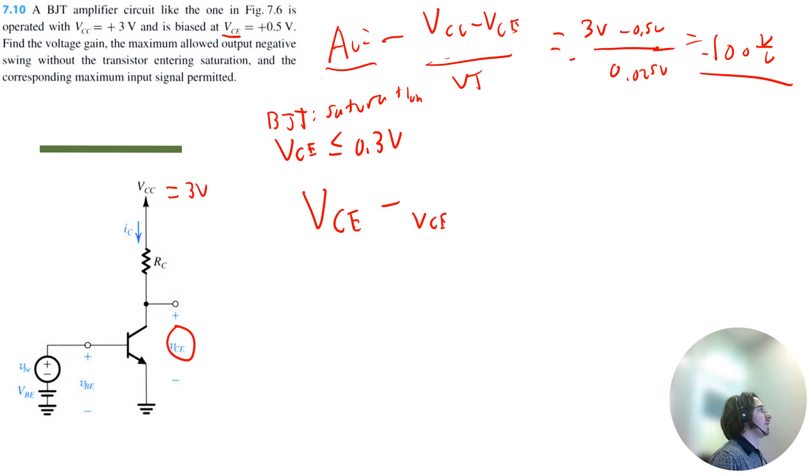The maximum it can be is 0.3 volts. So that would be 0.5 volts minus 0.3 volts, which is equal to 0.2 volts.